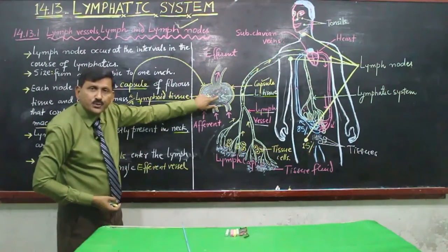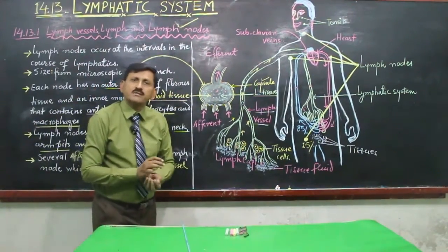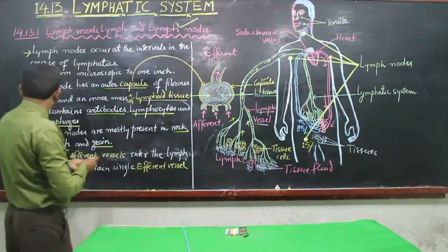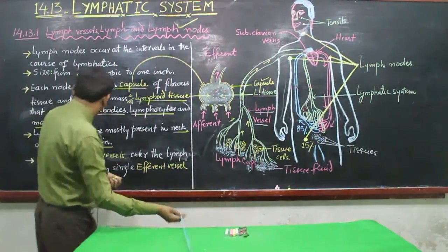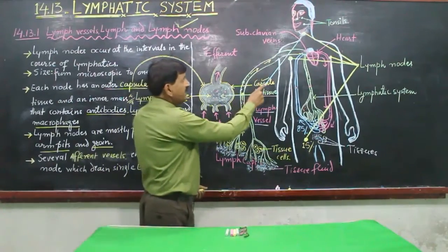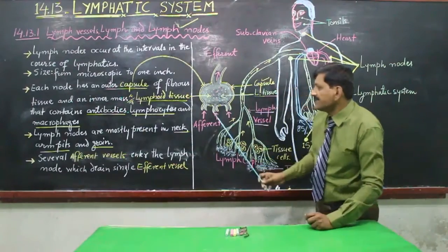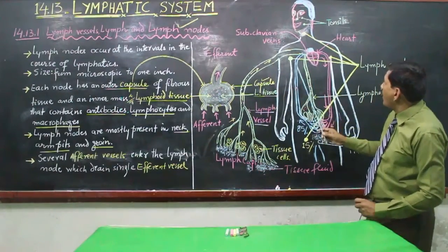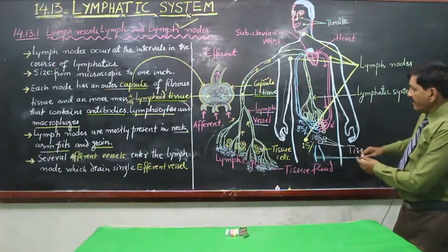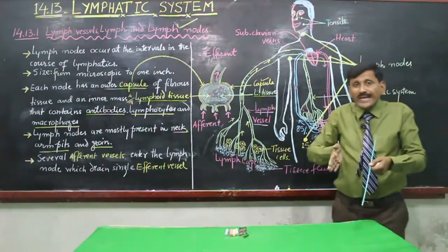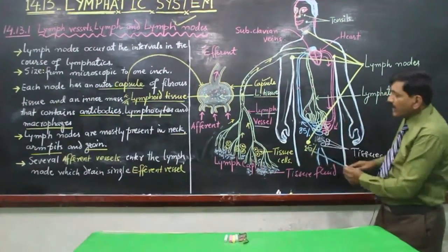These lymph nodes are mostly present in the neck, armpits, and groin. The groin region is where the two legs separate.